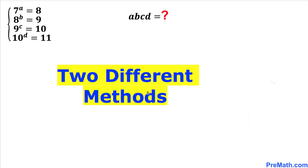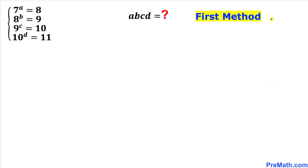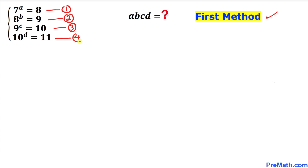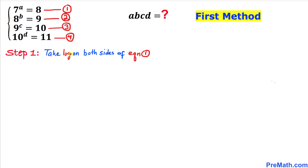I am going to share two different approaches. Here's our very first approach. Let's go ahead and label these equations. I'll label the first exponential equation as equation number one, the second as equation number two, the third as number three, and finally the fourth as equation number four. Here's our very first step — I've copied down equation one.